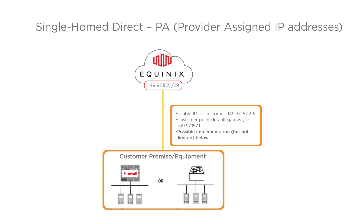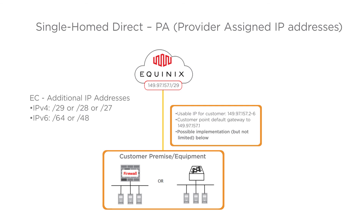If the customer wants to have more IP addresses behind that, they can purchase them from Equinix using the POF EC additional IP addresses. Their choices are slash 29, slash 28, or slash 27 for IPv4, or slash 64 or slash 48 for IPv6. The example shown here is for a customer with a slash 29.